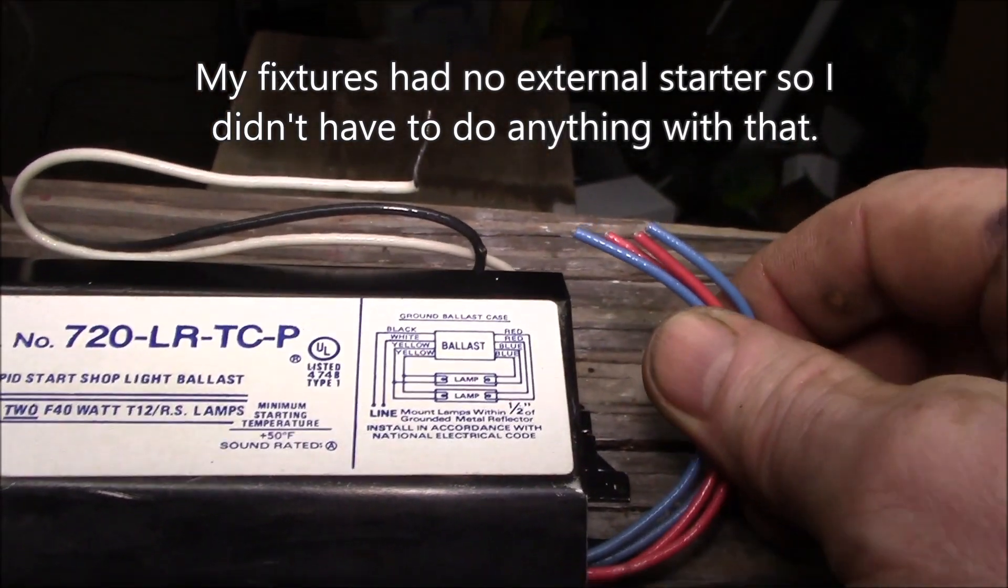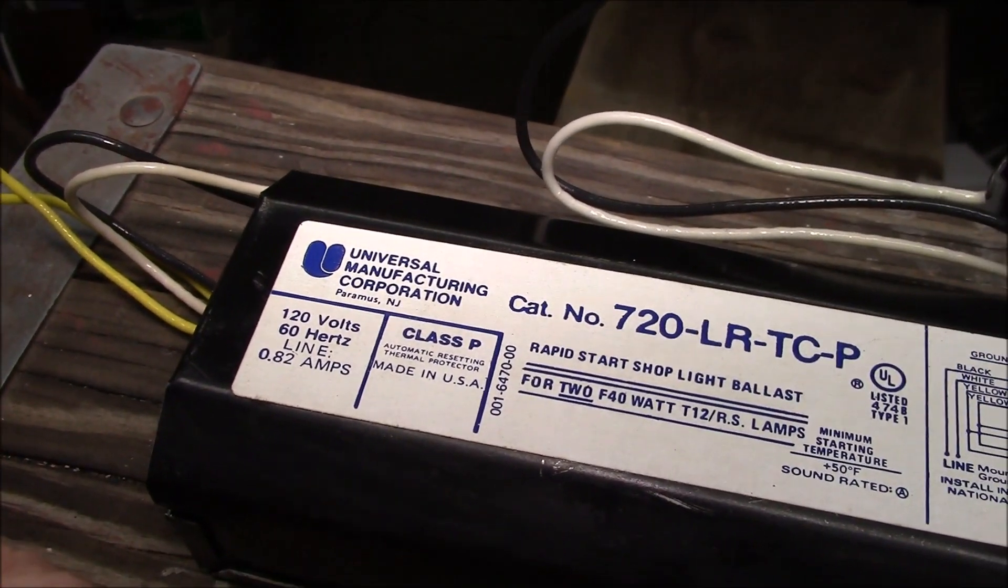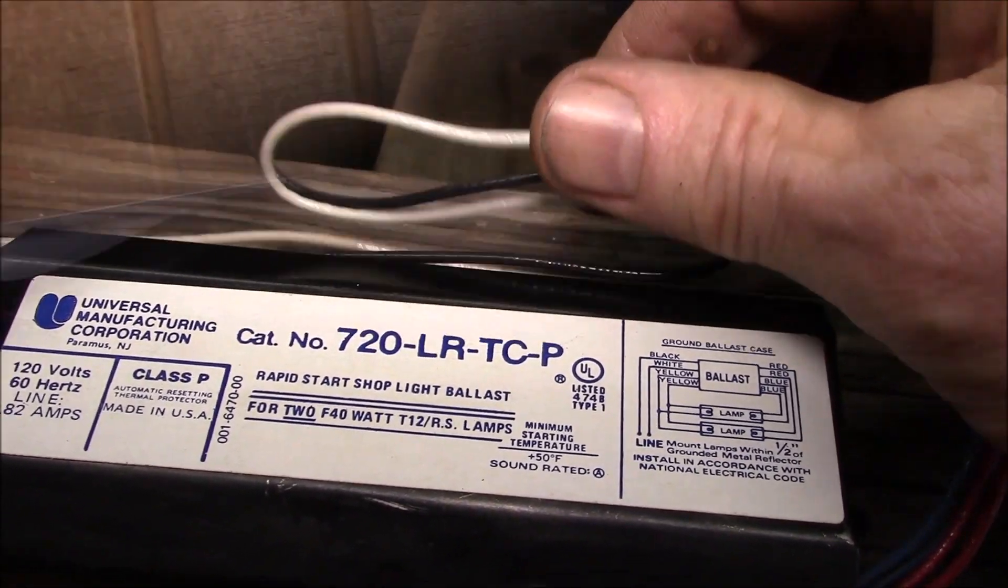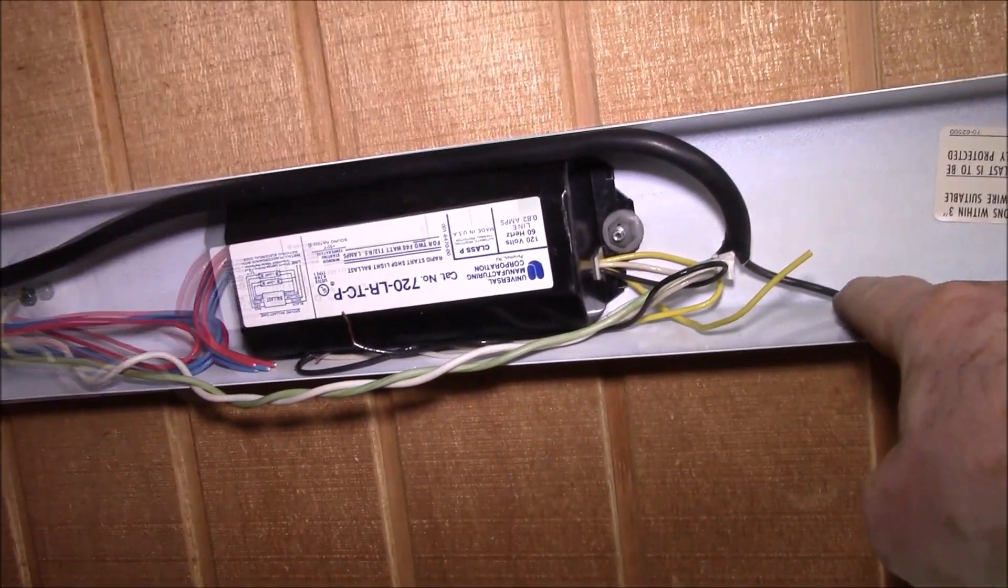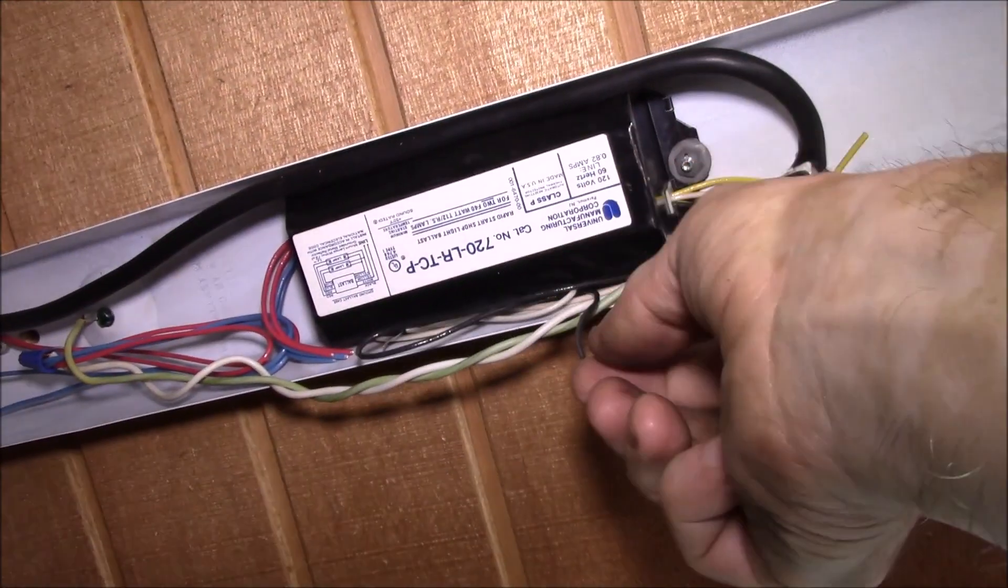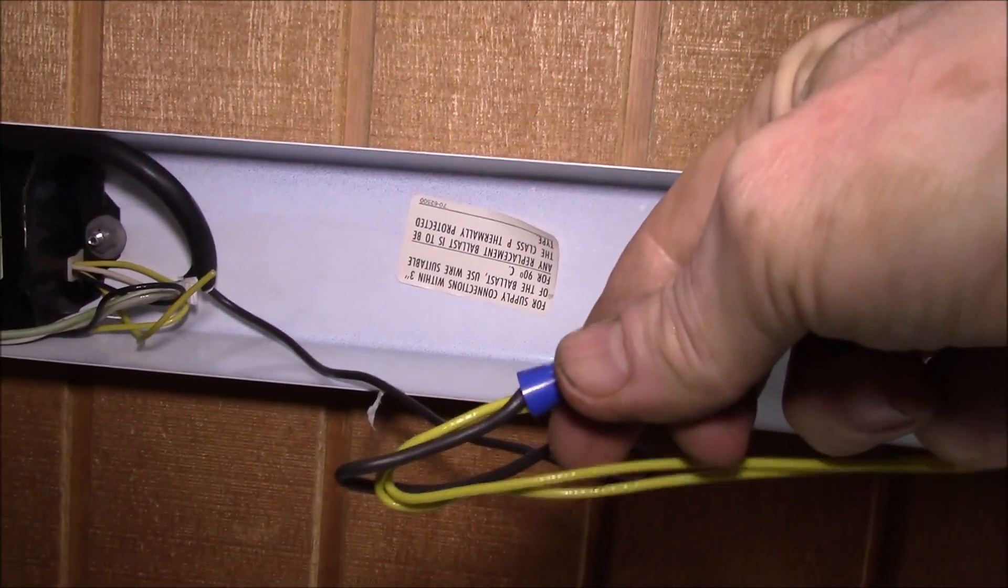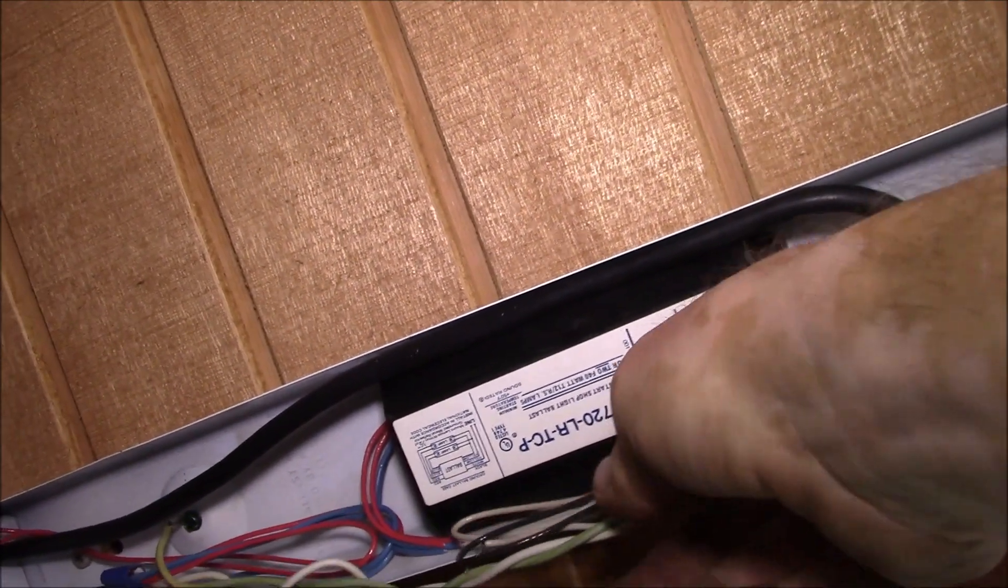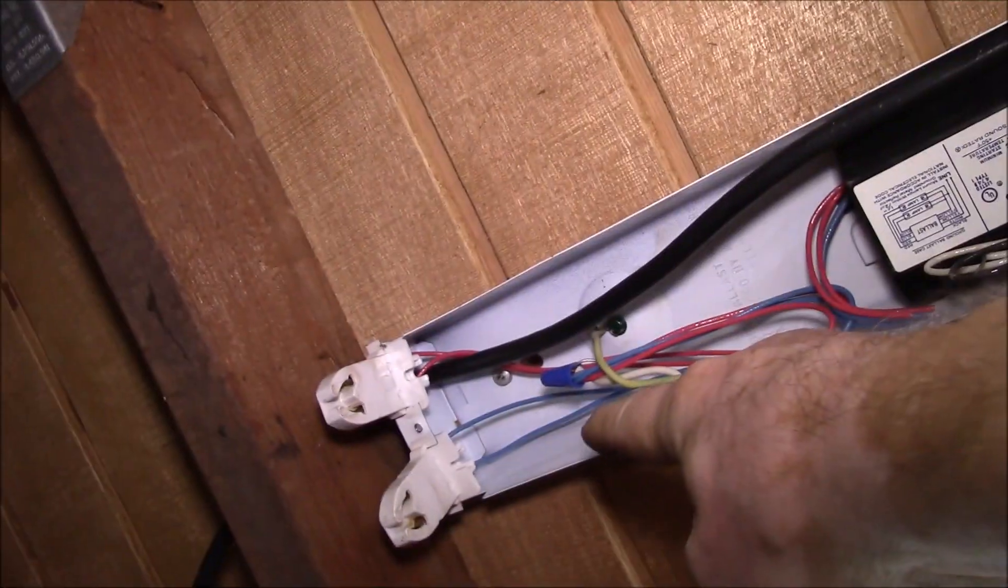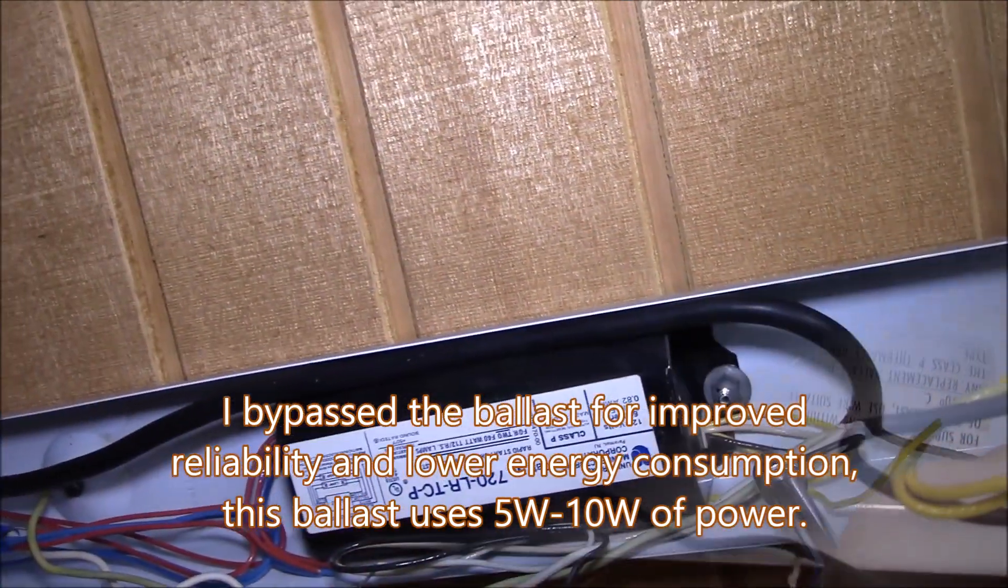Yeah, so there should be probably two or four wires going to one end of the fixture and two or four wires going to the other end of the fixture, and then two more wires hooked to the incoming power. So originally the incoming hot went to this wire that went into the ballast. So I just took the wire nut off that wire and put it onto these wires. And then likewise there was the original neutral that went to the ballast. I disconnected that and connected it over there. And the ballast is just sitting here, it's not doing anything.